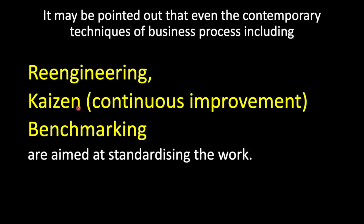Then comes Kaizen, a theory basically used in Japan. It is a Japanese way of running a company by always trying to improve the way people work and what they do. Then comes benchmarking — the act of measuring the quality of something by comparing it with something else of an accepted standard, using something as a standard in order to improve your own work, products or processes. Modern techniques like six sigma can also be used to set up standards.